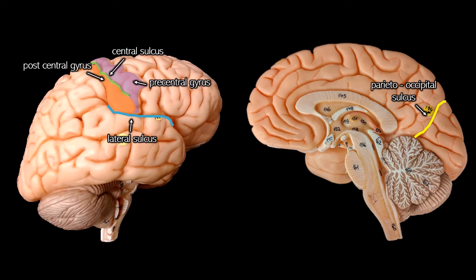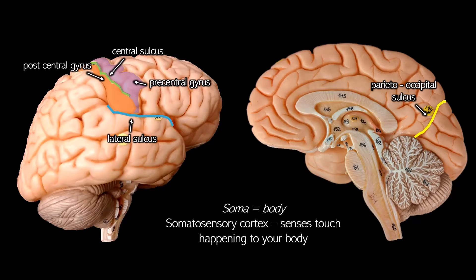The central sulcus is separating the frontal lobe from the parietal lobe. In front of it would be the precentral gyrus, and the gyrus behind the central sulcus would be the postcentral gyrus. The precentral gyrus contains your primary motor cortex, which makes sense because your frontal lobe is where all of the decision making is happening, including your decisions about where and how to move. The postcentral gyrus is the somatosensory cortex, which makes sense because your sense of touch happens in your parietal lobe.